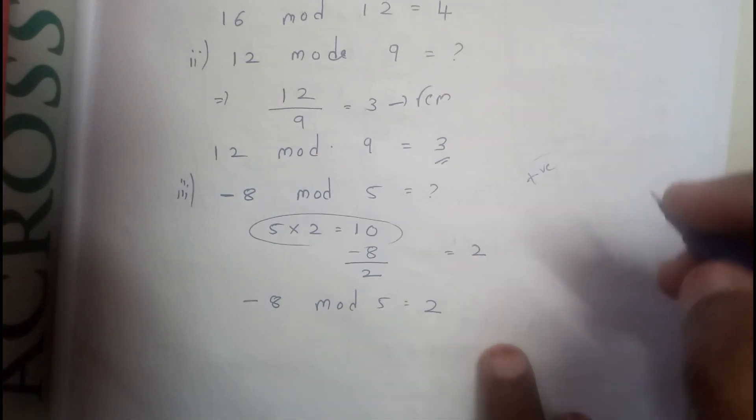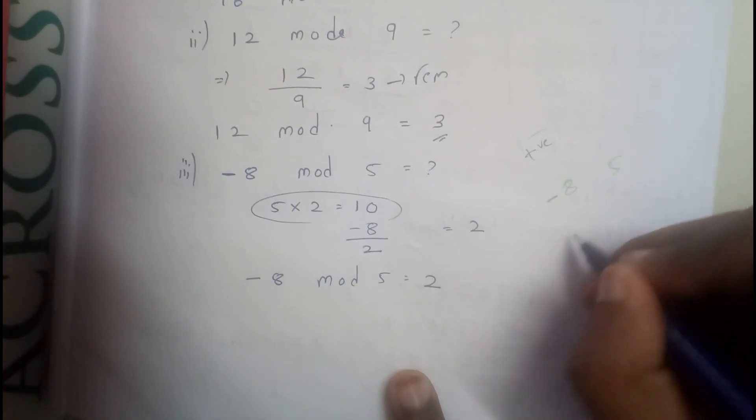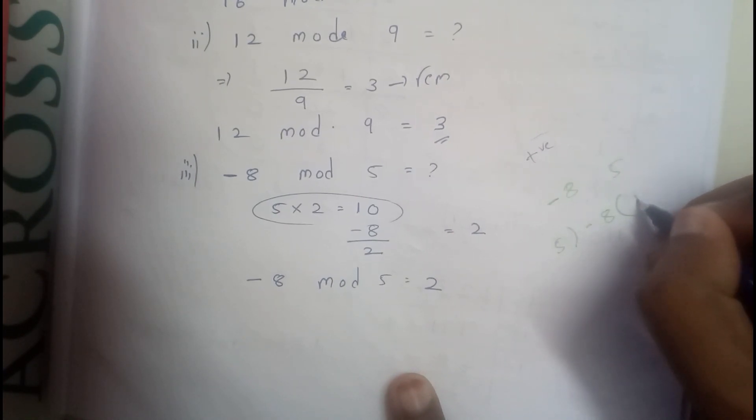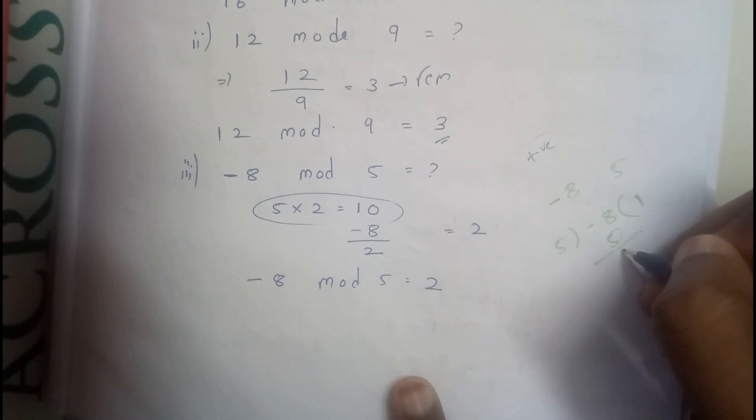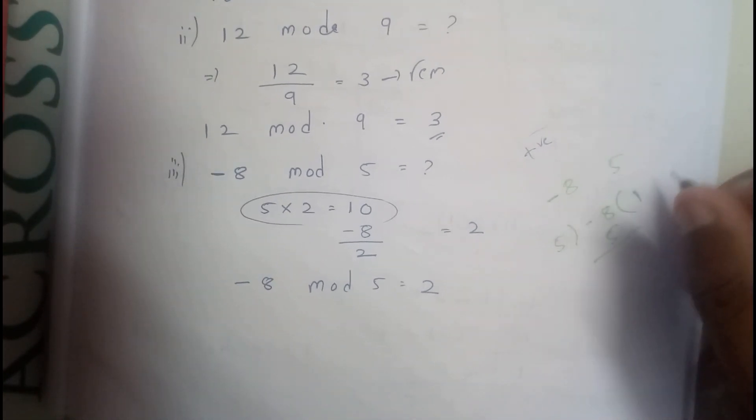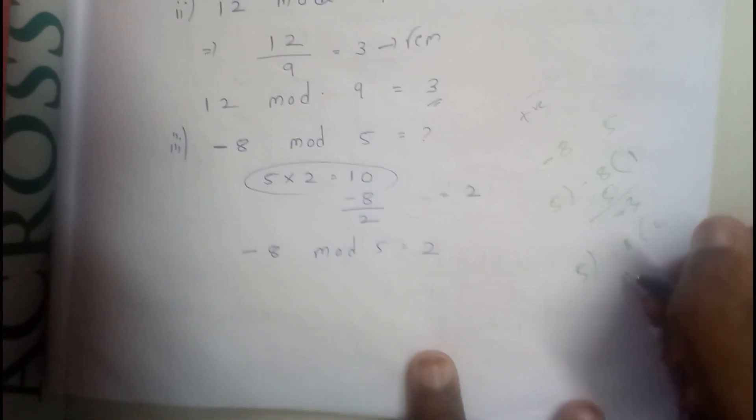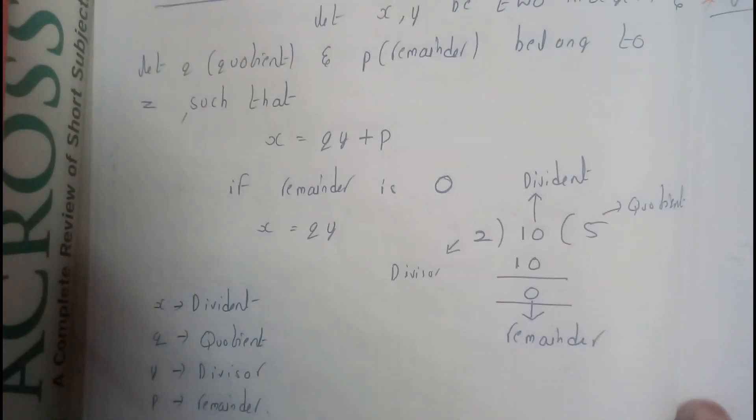And if the value is negative you can convert it into positive. So whenever I am trying to do this way, let us assume -8 mod 5. I want to find this. First I will be assuming, let us assume 1, so I get -3. And if I assume 2, I will be getting 10, so I will be getting positive 2. So this is what I have just used here. In this way you will be doing the modular division and division theorem.